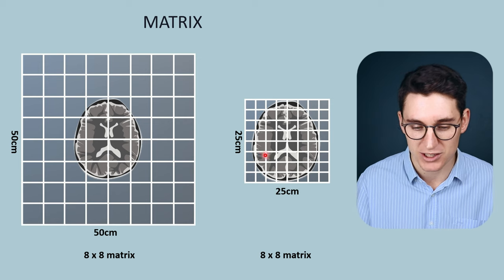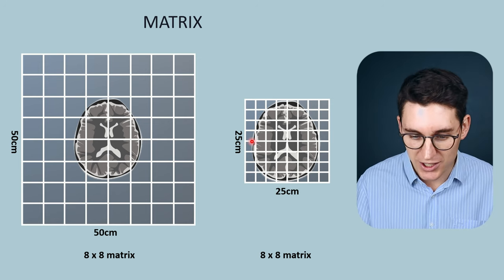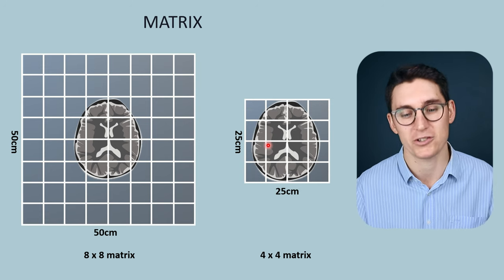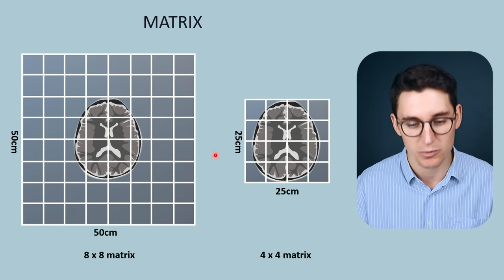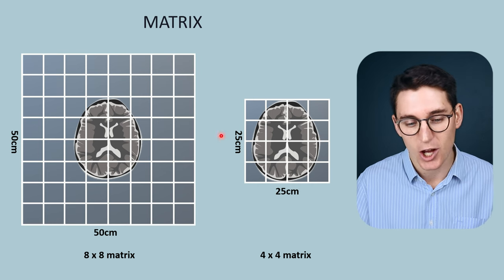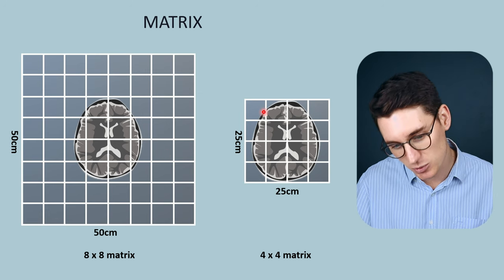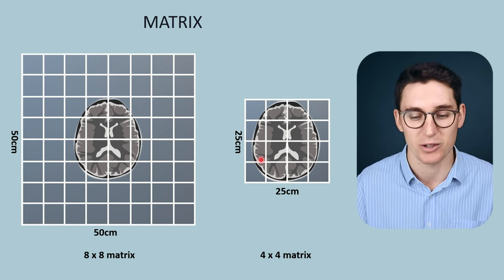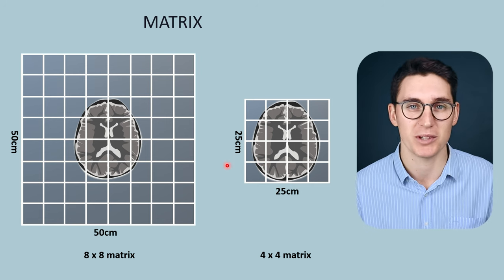We can change the matrix. If we wanted the same resolution within these two images, we could change the matrix in the smaller field of view to a 4×4 matrix. The pixel sizes would then be the same and the resolution between the two images would be the same. However, acquiring the smaller-FOV image with a 4×4 matrix would take much less time than the larger one because we've reduced the number of phase encoding steps — so we get the same resolution in less time.